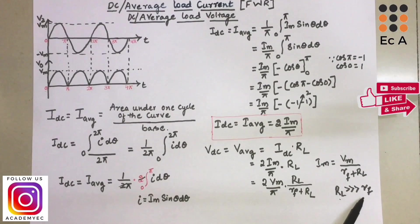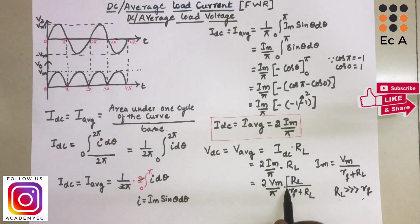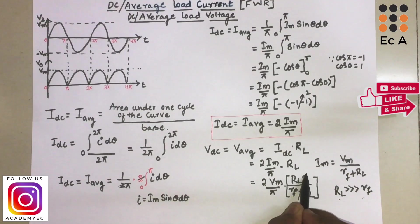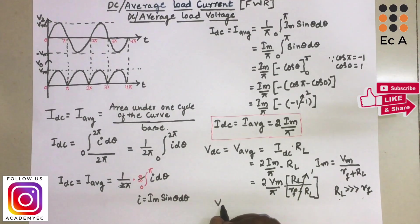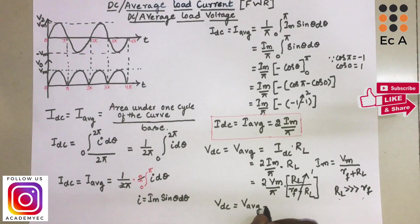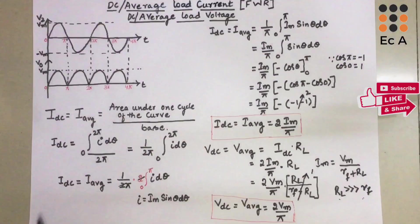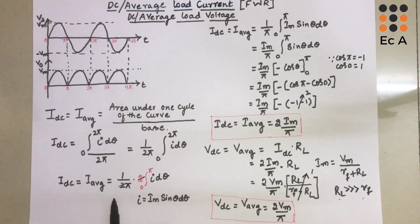Substituting the formula for Im, we get VDC = (2Vm/π) × RL / (RF + RL). We know RL is very much greater than RF, so the ratio RL / (RF + RL) is approximately equal to 1. At that case we can write VDC, which is equal to V average, is equal to 2Vm/π. This is the formula for VDC or V average of a full wave rectifier. Hope you have understood the topic, thank you.